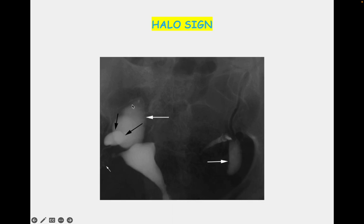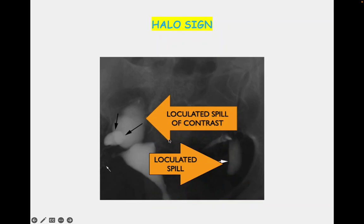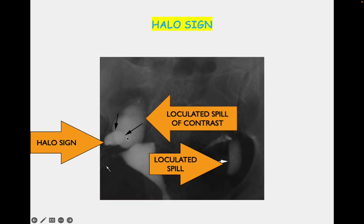Now you can see the halo sign. The loculated collections are visible here, here, and here. This is the ampullary end of the tube. The halo sign appears between the loculated collection and the dilated ampullary end, giving the typical halo sign appearance because of the dilated ampullary end and loculated spill of contrast.